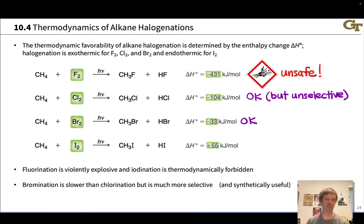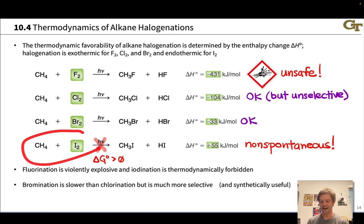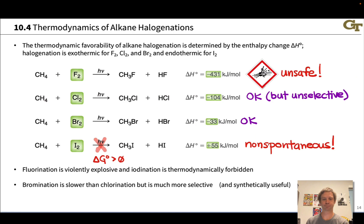Br2 is ideal — still an exothermic reaction, highly selective, not as rapid as chlorination, but we can live with that. Iodination is actually thermodynamically forbidden because the free energy change of the reaction is greater than zero — a non-spontaneous reaction. Nature wants it to live at I2 and methane, so no formation or very little formation of methyl iodide and HI is observed. Generally, with higher alkanes than methane, we're going to use bromination as the reaction of choice to install a halogen on an alkane selectively.